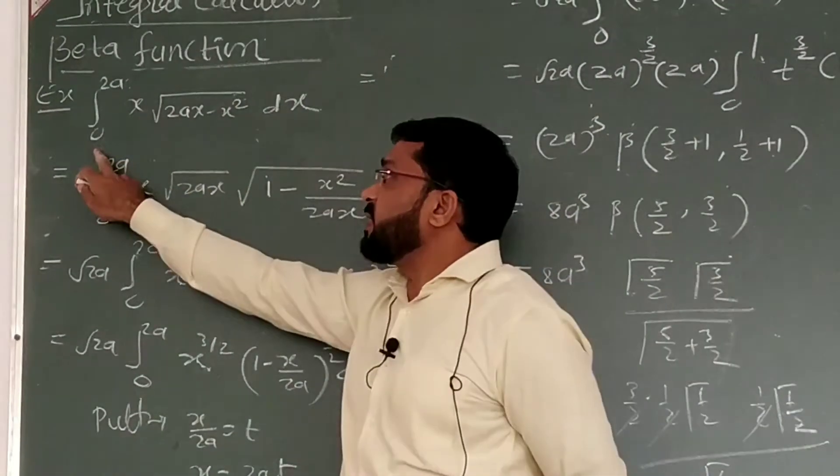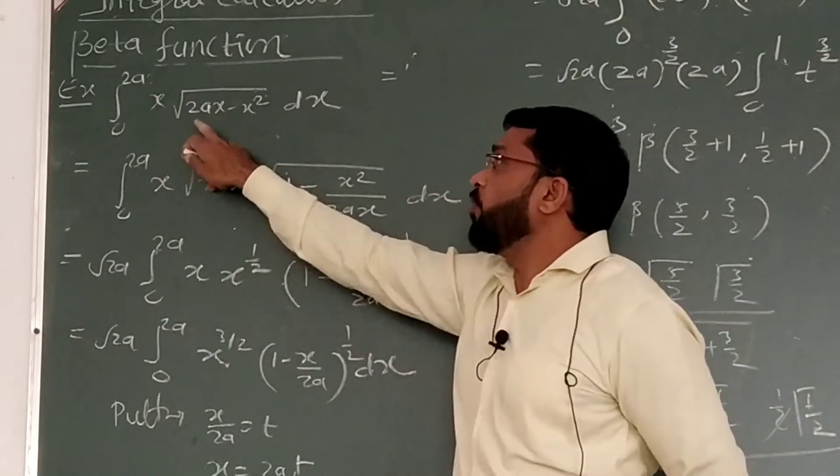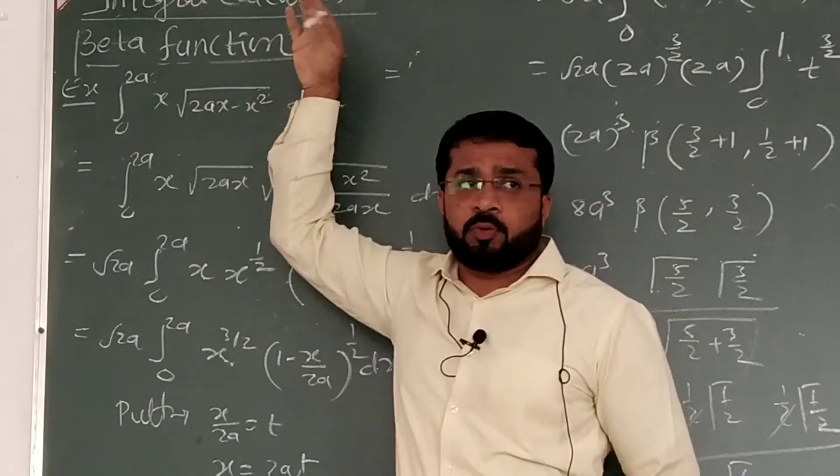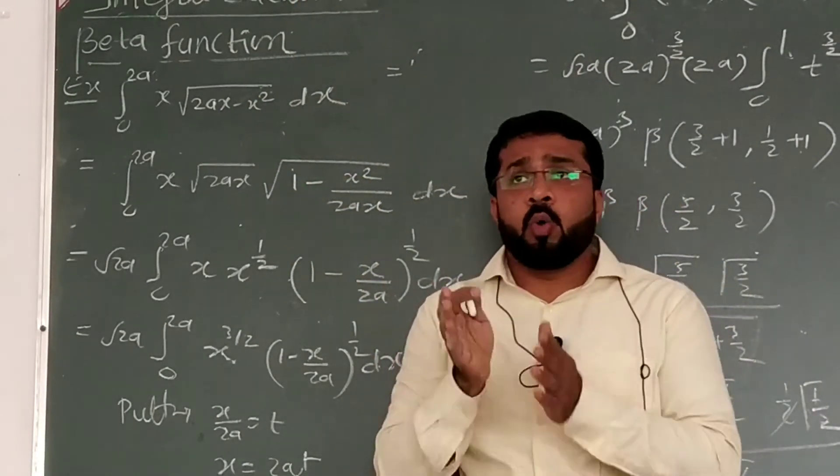It is: evaluate this integral 0 to 2a, x under root of 2ax minus x square dx. Under root means to the power half. Now, whenever we solve the example on the beta function, you have to write it in the form of 1 minus.